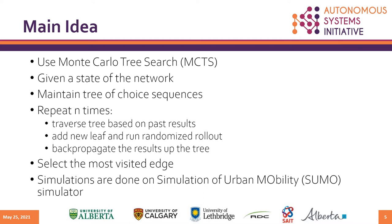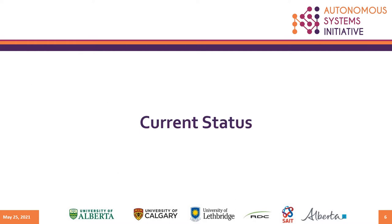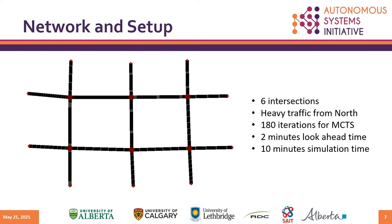For our experiment, we're using SUMO for simulation. For our initial experiments, we're using a road network with six intersections, with more cars traveling from north to south for a period of 10 minutes. As for Monte Carlo Tree Search, we're using 180 iterations with two minutes of random simulations.